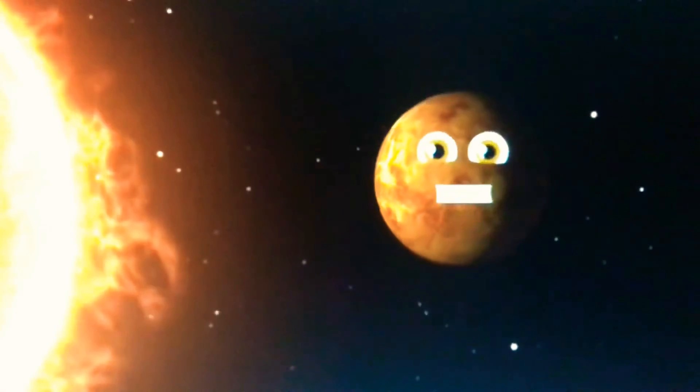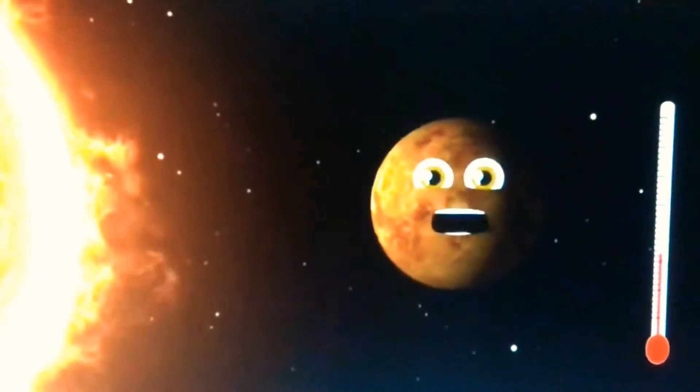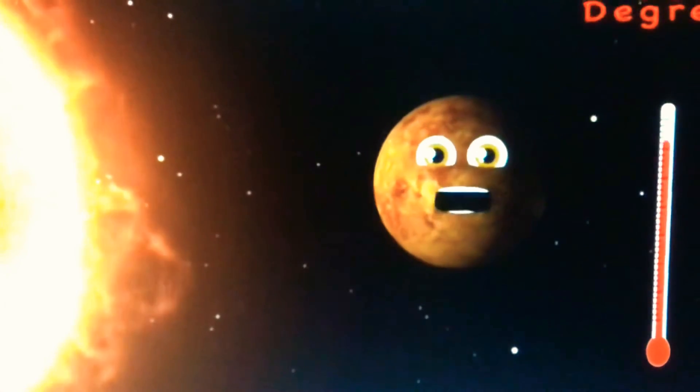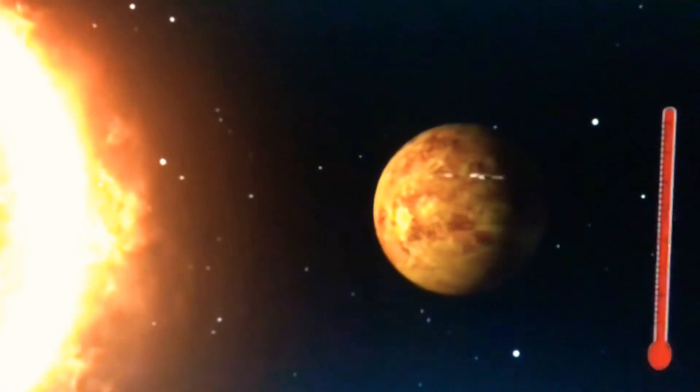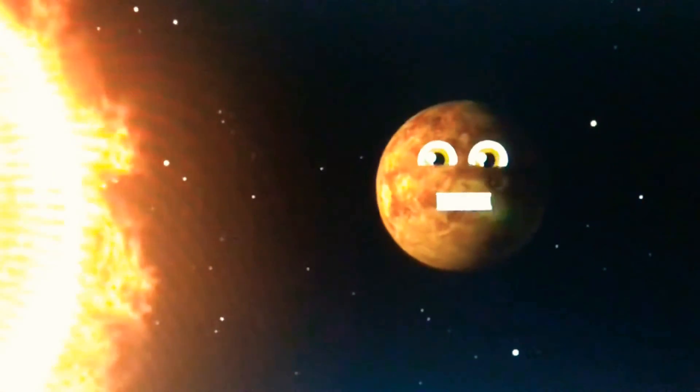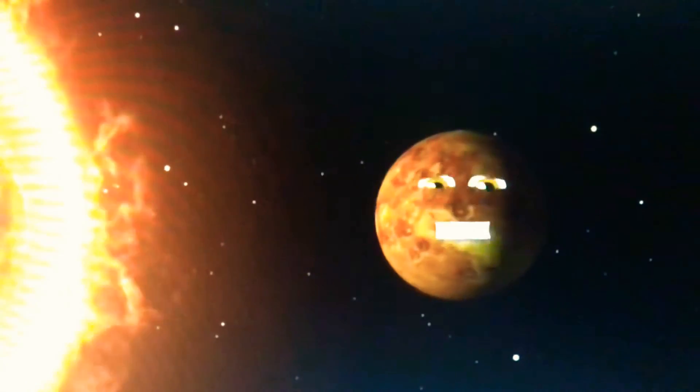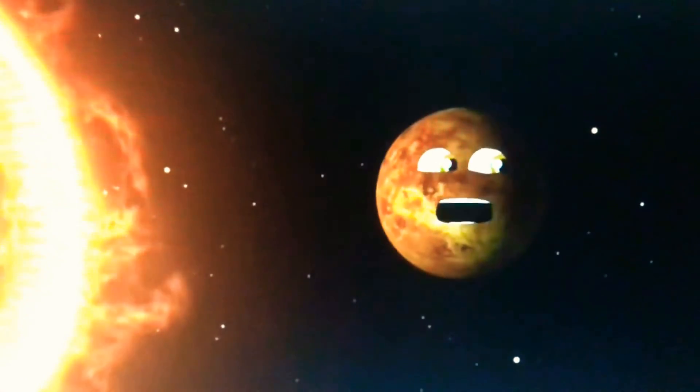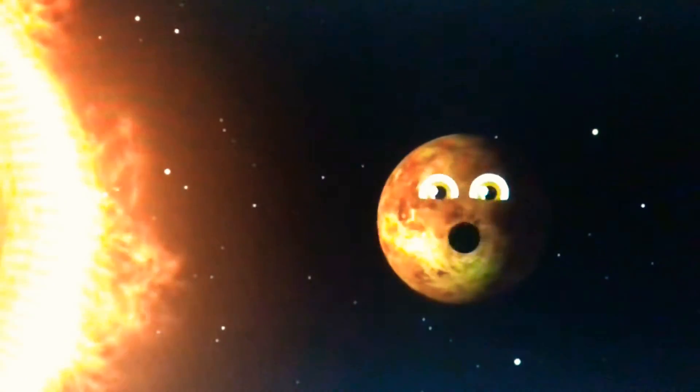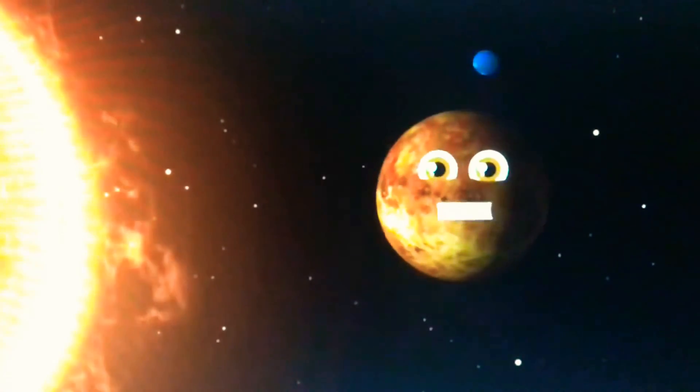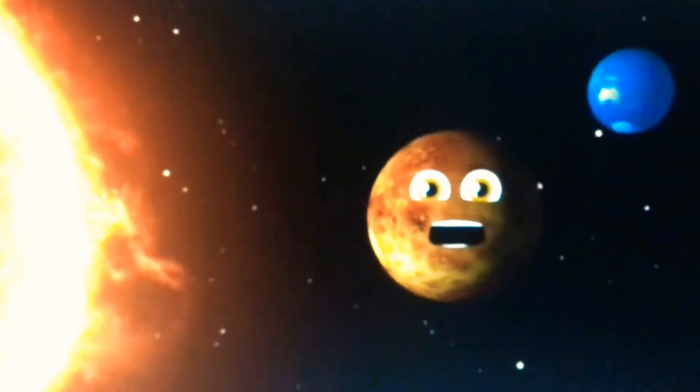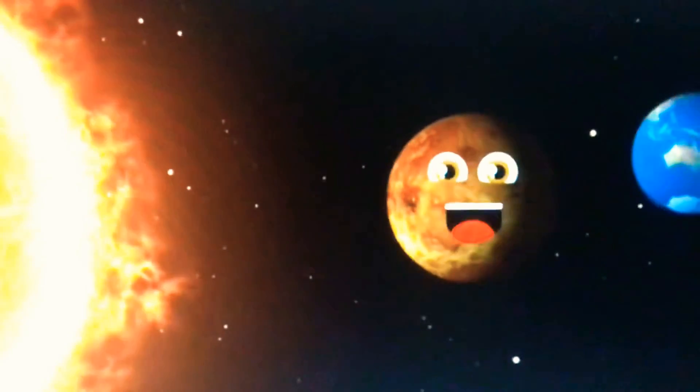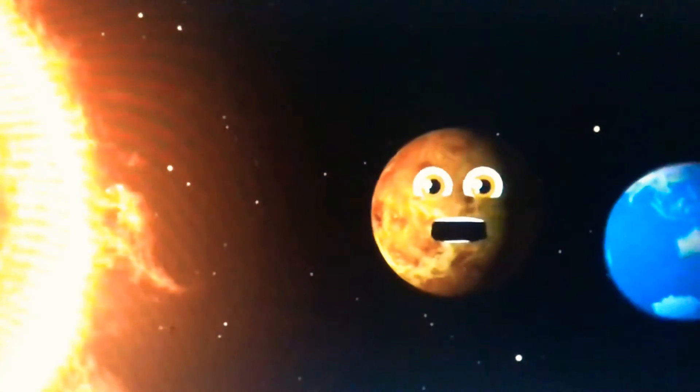I'm 900 degrees, yeah that's Fahrenheit. I'm the hottest planet in the solar system, that's right. The sun sets in my east and comes up in my west due to retrograde rotation. I spin backwards the best.